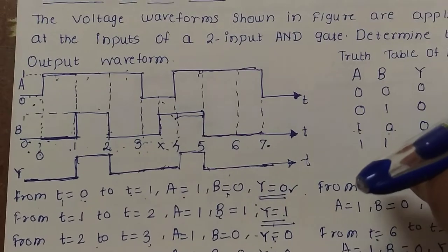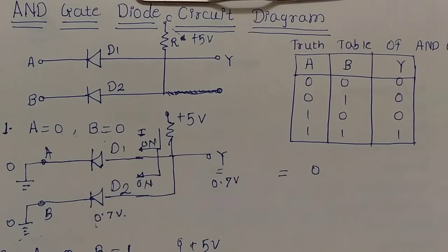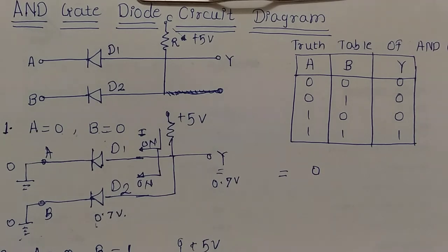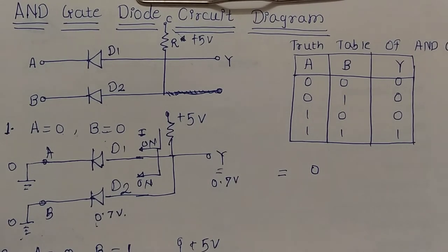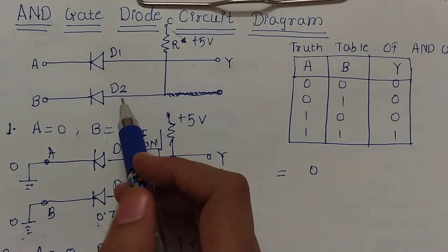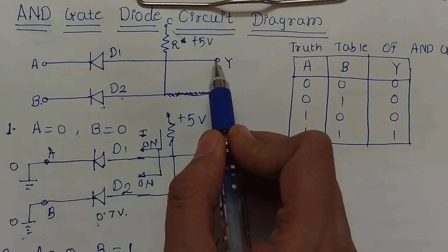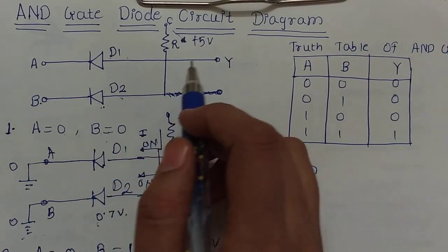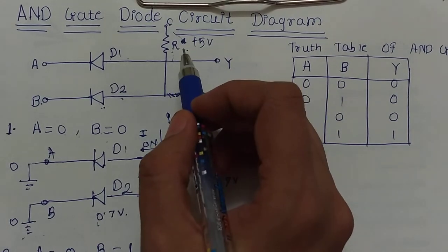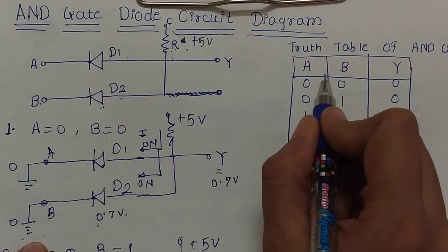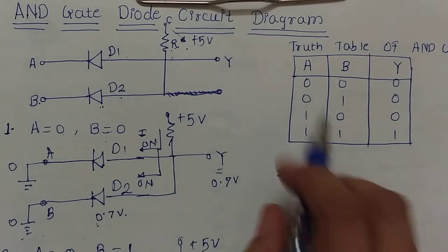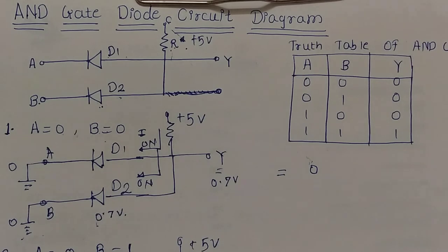Now we will study the circuit diagram of the AND gate. An AND gate can be designed using diodes or transistors. Here we study the diode AND gate circuit. When diodes are used to design an AND gate, it is called a diode AND gate. The basic circuit uses two diodes D1 and D2, with two inputs A and B, output at Y, supply voltage of +5V at terminal C, and a current-limiting resistor R.